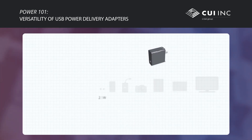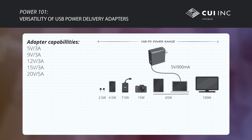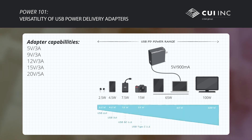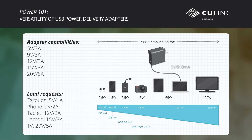The voltage and current level that a USB PD source provides is determined through a negotiation between the source and the load. The connection is initially made at 5V with a 900mA maximum current to allow interoperability with legacy devices. The source then advertises its voltage and current capabilities, and the load determines which configuration to use and requests it. If no communication occurs or communication is lost, the source will provide the initial 5V 900mA supply.